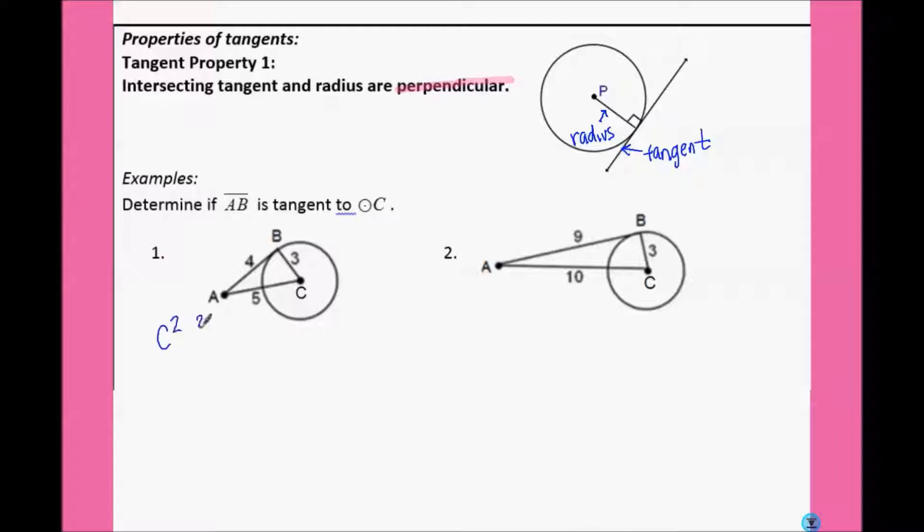We want to know, is C squared equal to A squared plus B squared? So remember that this would be the right angle. So across from that, that's our hypotenuse, which will be C. So 5 squared, does it equal 4 squared plus 3 squared? 5 squared is 25, 4 squared is 16, 3 squared is 9, 16 plus 9 will give us 25, which is equal to 25, so AB is tangent.